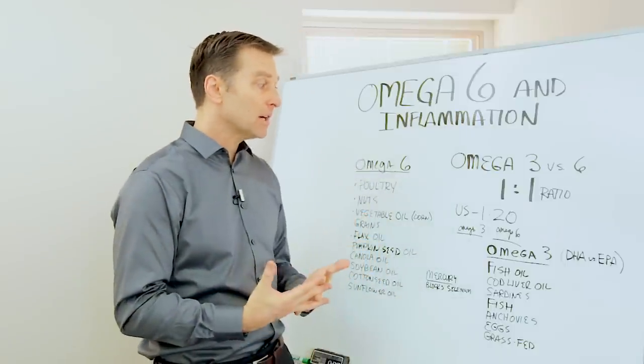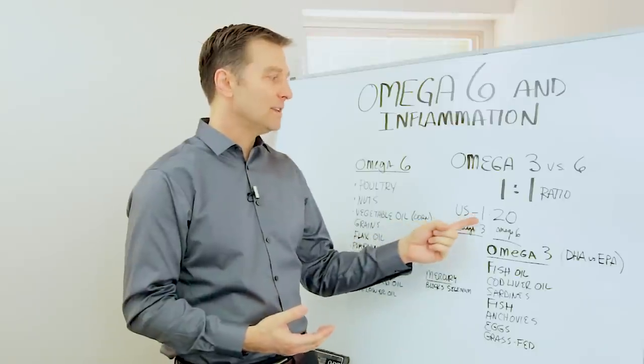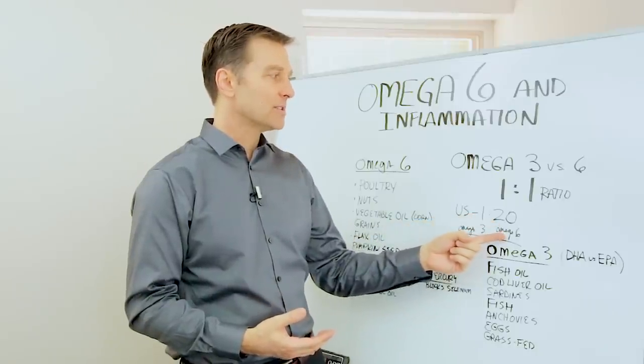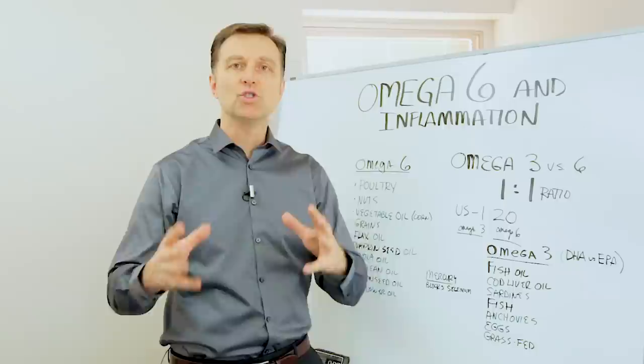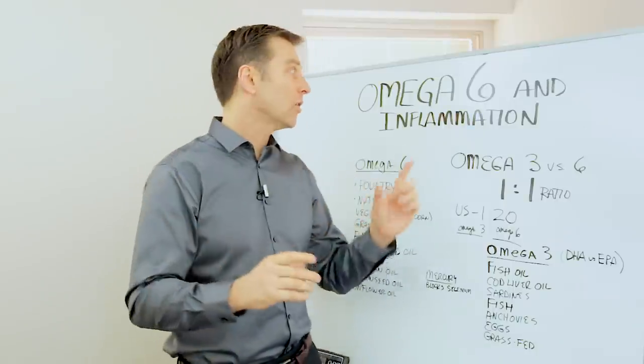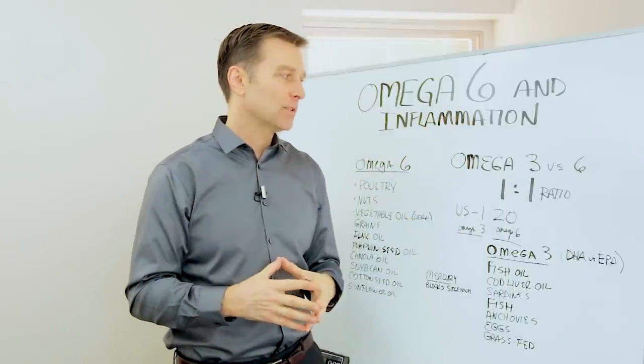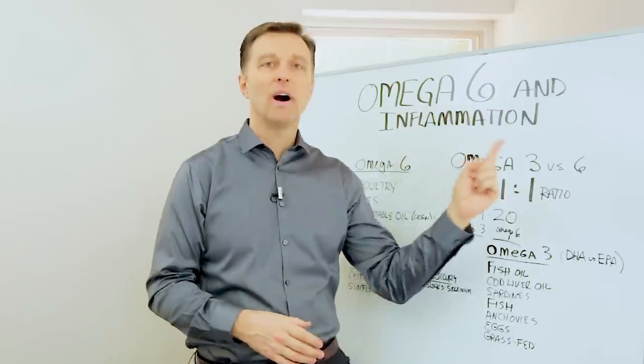Now in America, the ratio is 1 to 20 omega-6. In other words, people consume way more omega-6 than omega-3. Ideally, it needs to be 1 to 1.